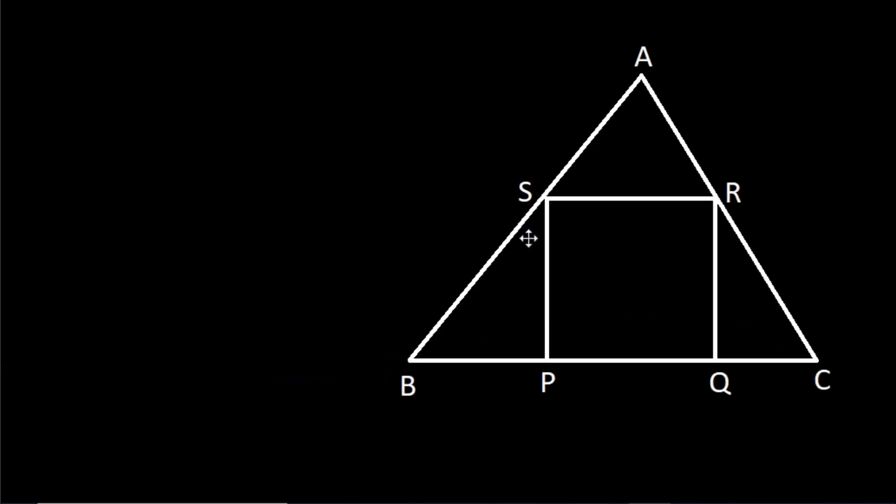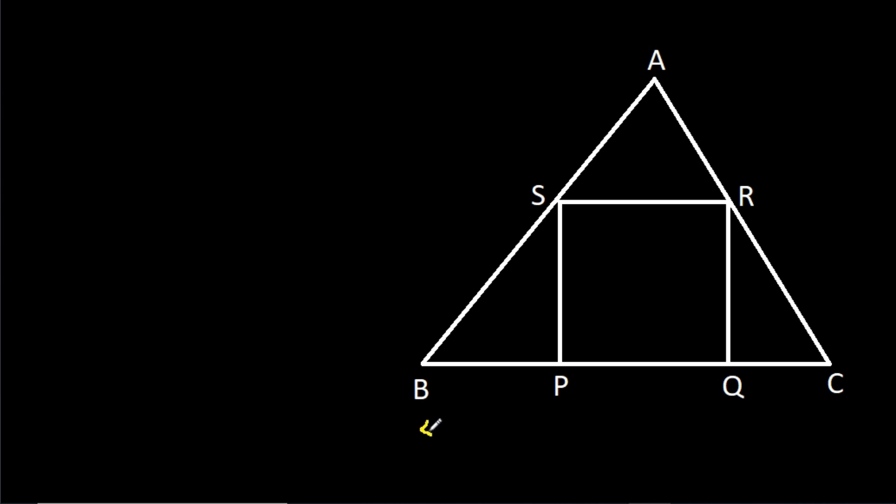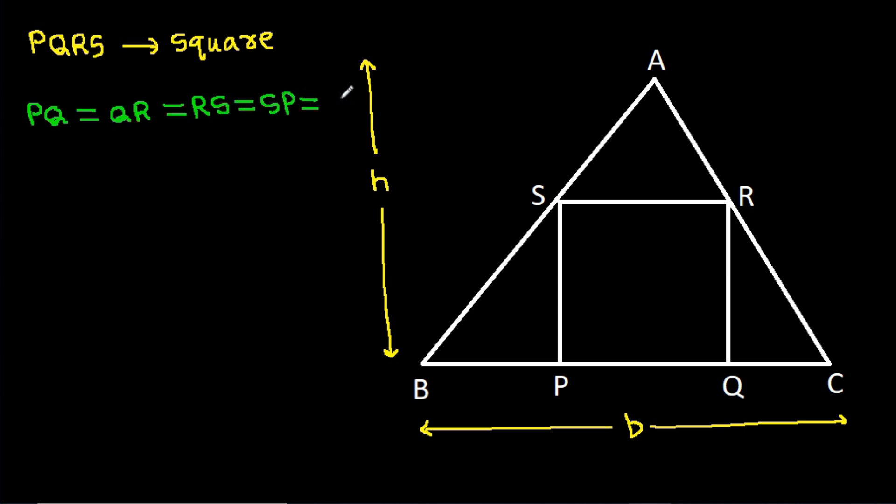In any triangle, if the base is B and height is H and if PQRS is a square, then PQ will be equal to QR, will be equal to RS, will be equal to SP. Suppose PQ is a, QR is a, and RS is a, and SP is a.